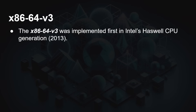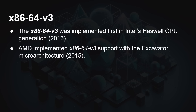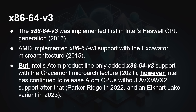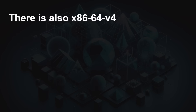x86-64v3 was implemented in the first Intel Haswell generation CPUs in 2013. AMD implemented it in 2015. The Intel Atom product line only added v3 support with the Gracemont microarchitecture. However, Intel still continued to release Atom CPUs without AVX or AVX2, including the Parker Ridge line and some variants in 2023. This is why v3 has been slowly becoming a baseline — not all Intel processors support it, so mandating it would be problematic. These are Atom processors, not server processors, but you're not guaranteed to have v3 and need to check your particular processor.